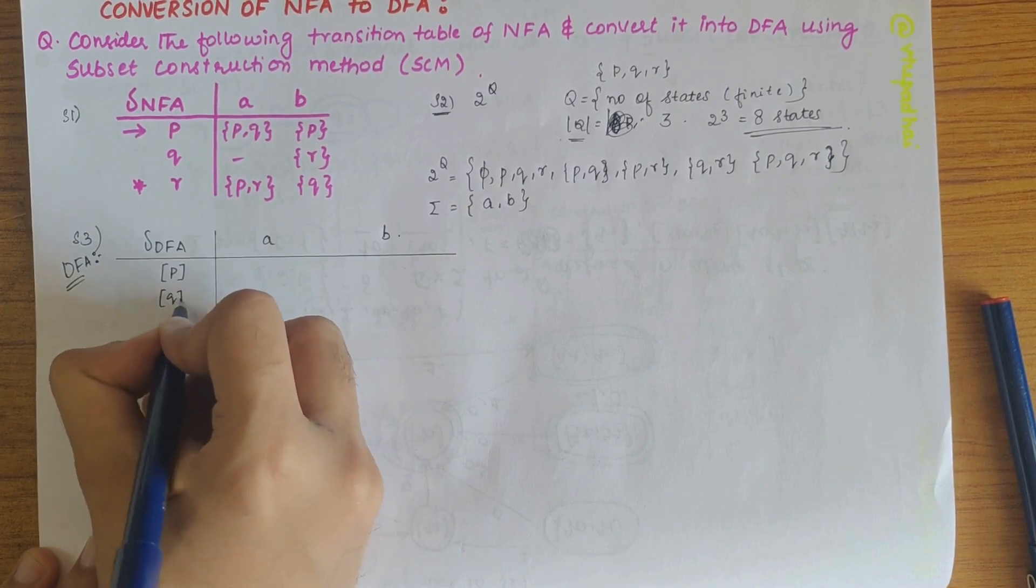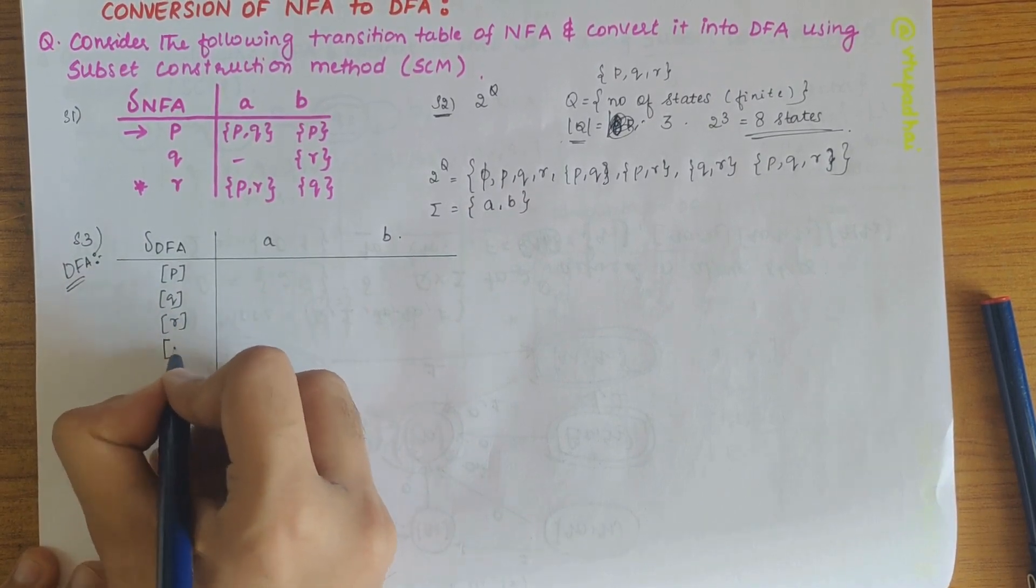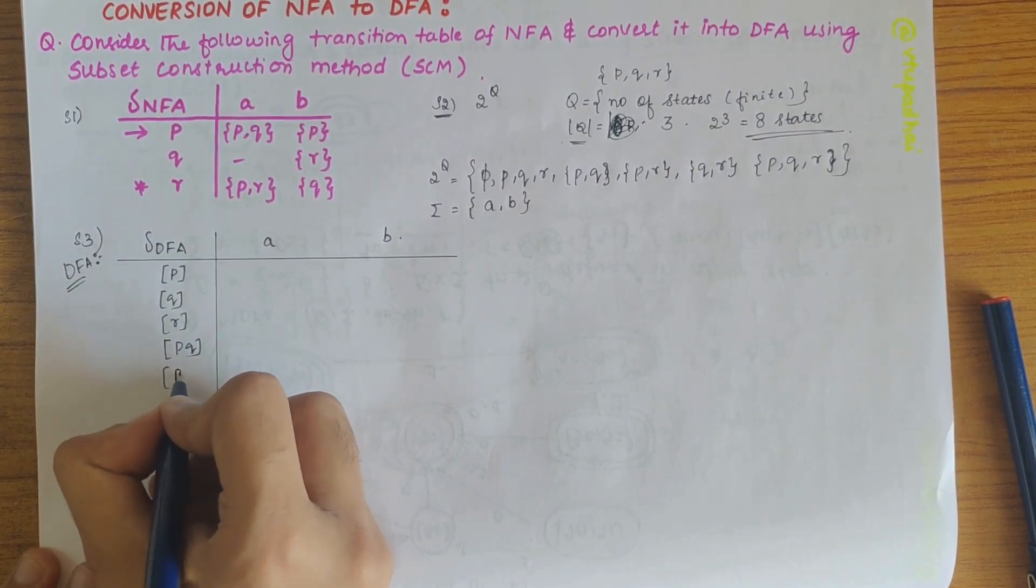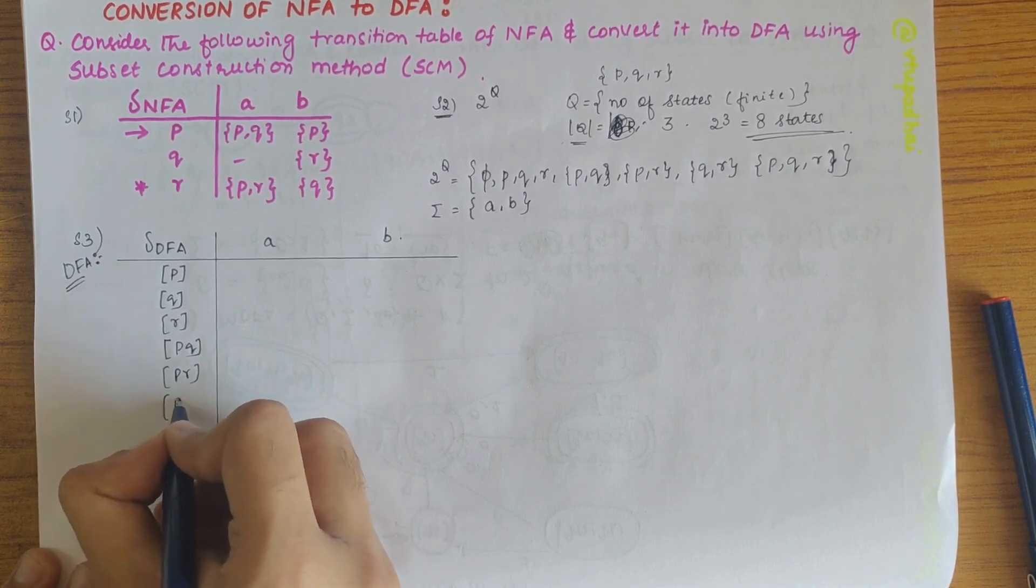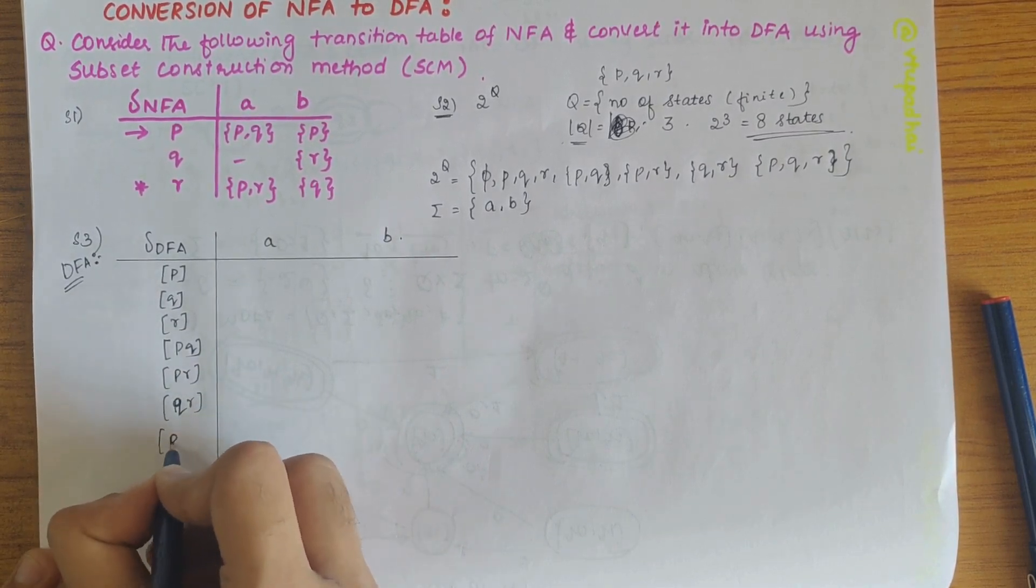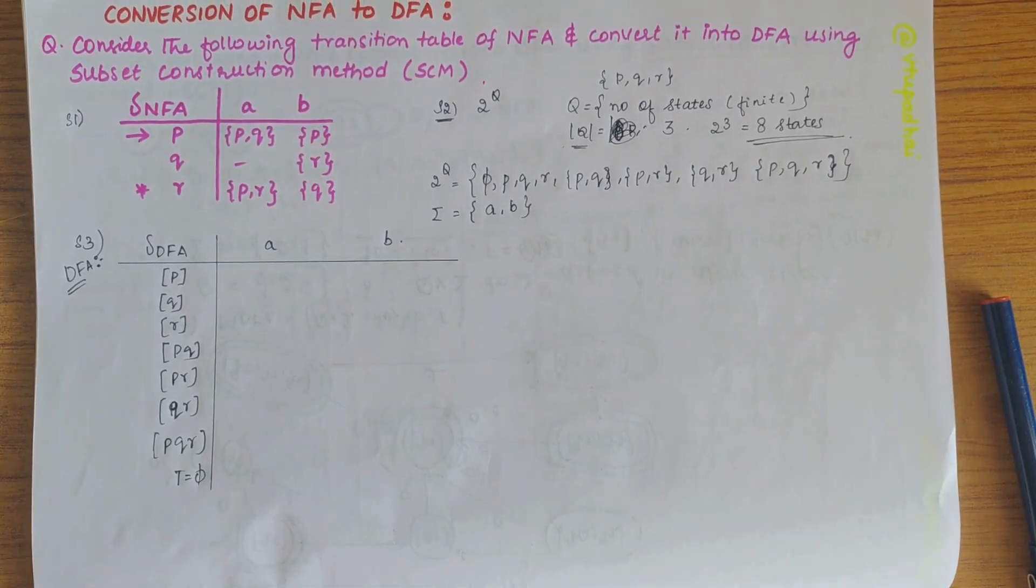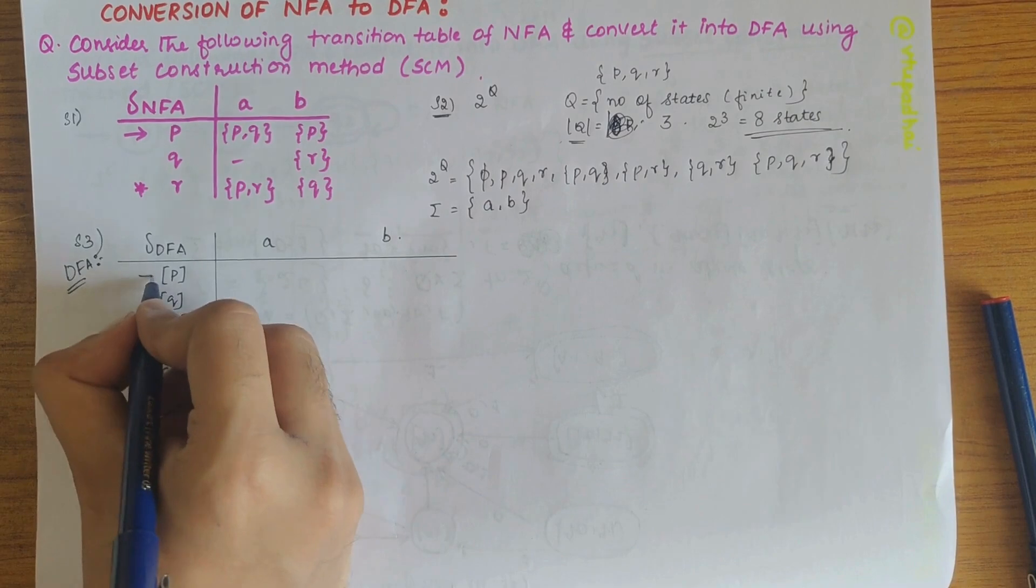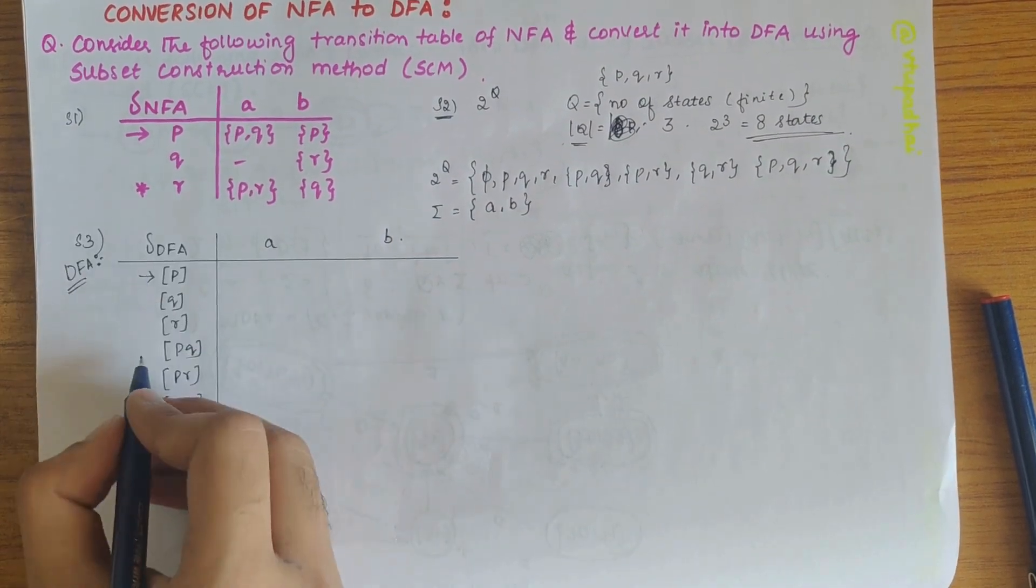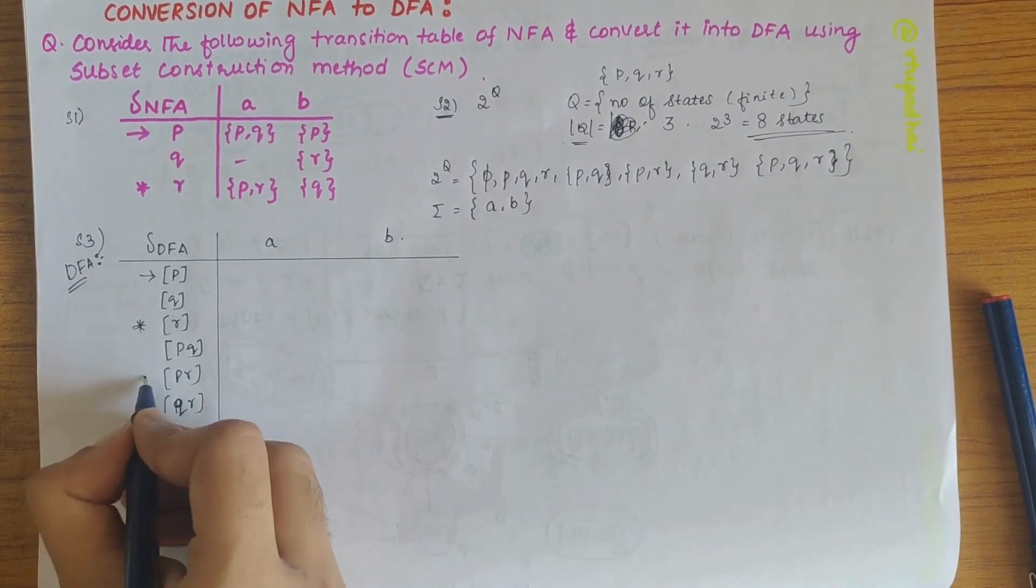So p, q, r, pq, pr, qr, pqr and t that is null state. So here the start state is p, so let's put an arrow there and end state is r. So wherever there is r, let's put a star there.